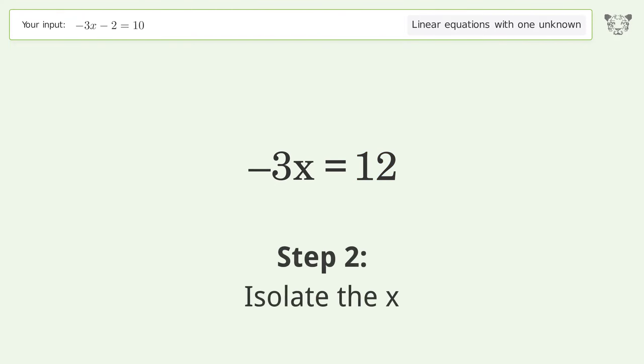Isolate the x. Divide both sides by negative 3. Cancel out the negatives.